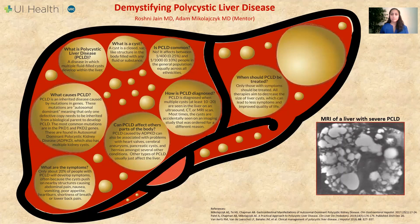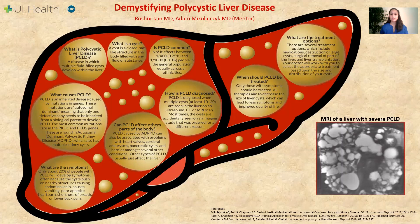Only those with symptoms need treatment for polycystic liver disease. All therapies aim to decrease the size of the liver cysts, which can then lead to fewer symptoms and improved quality of life. There are several treatment options, including medications, destruction of large cysts, surgical removal of part of the liver, and liver transplantation. Your doctor will work with you to determine which treatment plan is best for you.